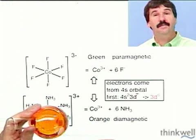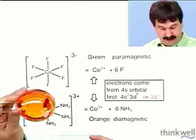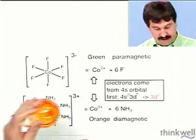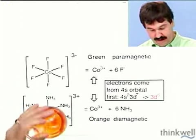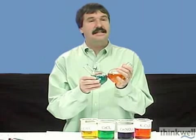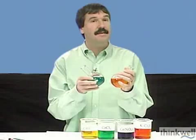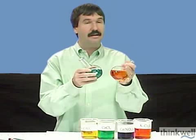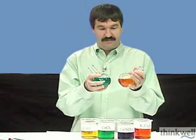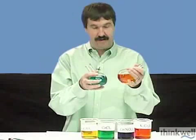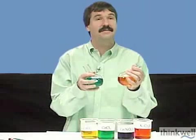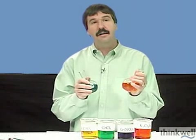Now, this also is cobalt in a 3-plus oxidation state. This compound is cobalt hexamine or hexamine cobalt-3. And it's the exact same metal. It's the same oxidation state. And in fact, in the metal, it's exactly the same electron configuration. Yet, they're clearly very different as far as our observation goes. Their colors are vastly different.